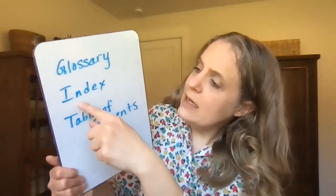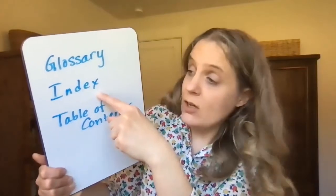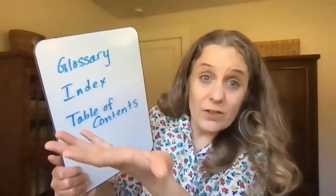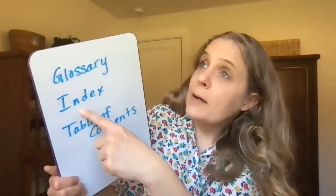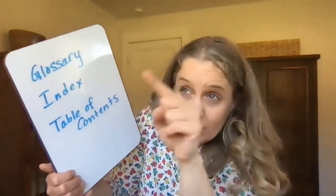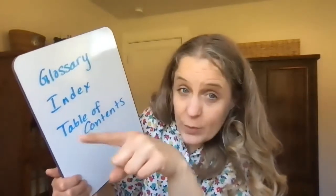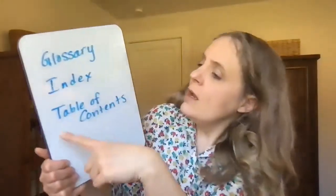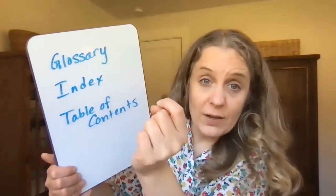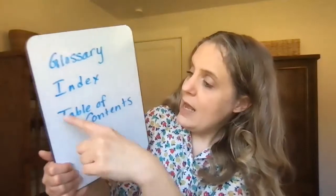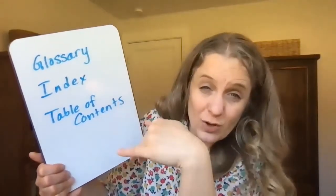An index is usually in the back of a nonfiction text, and it is an alphabetized list of all the important things that have been covered in that text. So if you were looking up wood-burning fireplaces, you could look in the back under W for wood or F for fireplaces and see if the text has any information before going to the bother of reading the whole entire book. The index will tell you which pages it talks about that certain thing. A table of contents is usually in the front of a nonfiction text, and it tells you what is going to be covered — it's kind of like showing you the chapters.